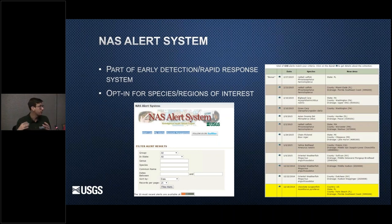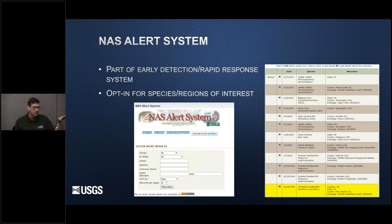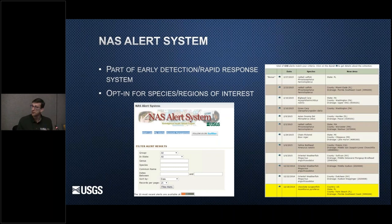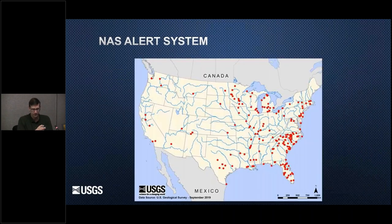We have all the ANS regional panel regions available so users can select them with one click. You can sign up for a particular taxonomic group — if you're only interested in fishes, you can get just fish information — or sign up for alerts about a particular taxon of importance. We email these alerts out with information about the introduction: where, when, and what's new. On the website, you can filter through all these alerts. You can click on a particular alert and get more information, including a map and all the detailed specimen information. This shows an example of distribution of alerts for the first half of 2019 — a lot of them are closer to Florida, and most are drainage alerts, things that have moved into a new watershed.